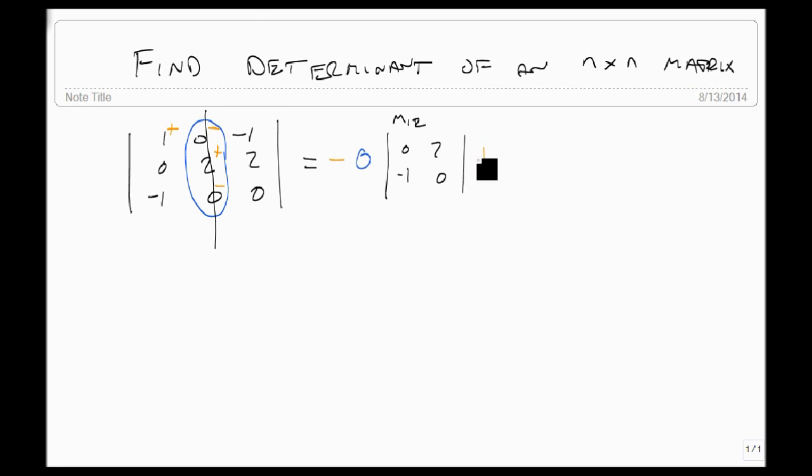Well then, I'm going to add, because I'm going to use that, the two found here, and I'm going to look at m two, two. So now I'm also going to ignore this row, so that gives me a one, minus one, minus one, zero.